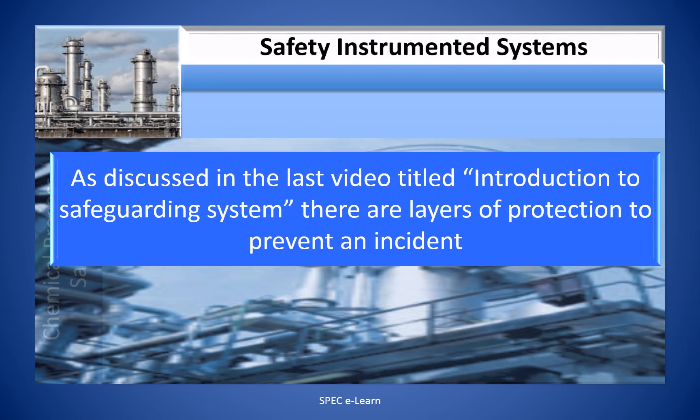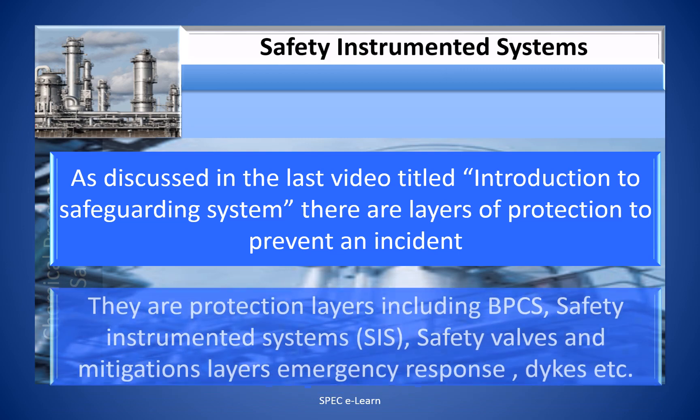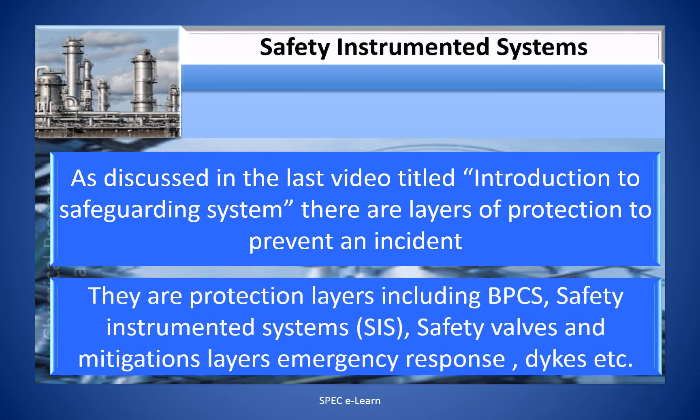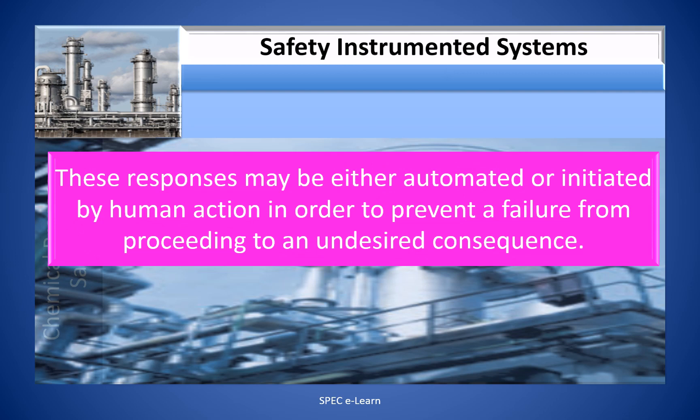As discussed in the last video titled Introduction to Safeguarding Systems, there are layers of protection to prevent an incident. These protection layers include the basic process control system, safety instrumented system, safety valves, and mitigation layers such as emergency response like dykes. These responses may be either automated or initiated by human action in order to prevent a failure from proceeding to an undesired consequence.